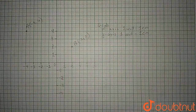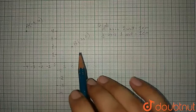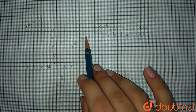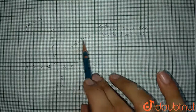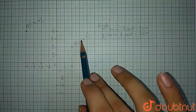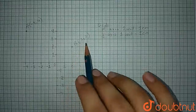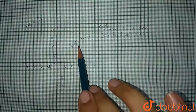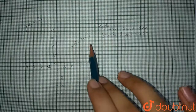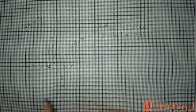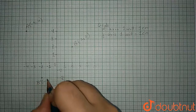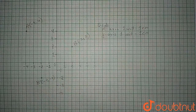Now we have to reflect these points in the origin and obtain A' and B'. Whenever we reflect any point in the origin, the sign of both the x-coordinate and y-coordinate changes. So point B has x-coordinate 2 and y-coordinate 2, so B' will have x-coordinate -2 and y-coordinate -2. So B' at (-2, -2) is right here.